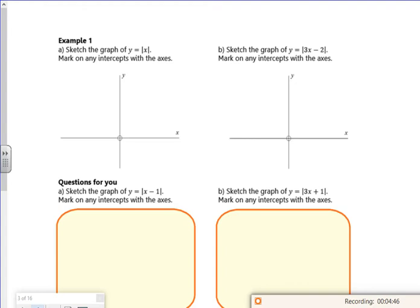So the next one says, do a graph of the modulus of x. So if I was doing this without the calculator, I know that y equals x looks like that. And then anything that which is below the x-axis is reflected over.